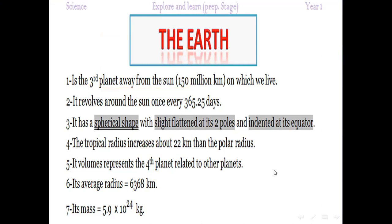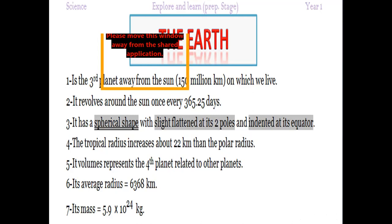The tropical radius increases about 22 kilometers than the polar radius. The planet Earth represents the third planet away from the Sun. It also represents the fourth planet according to volume compared to other planets.